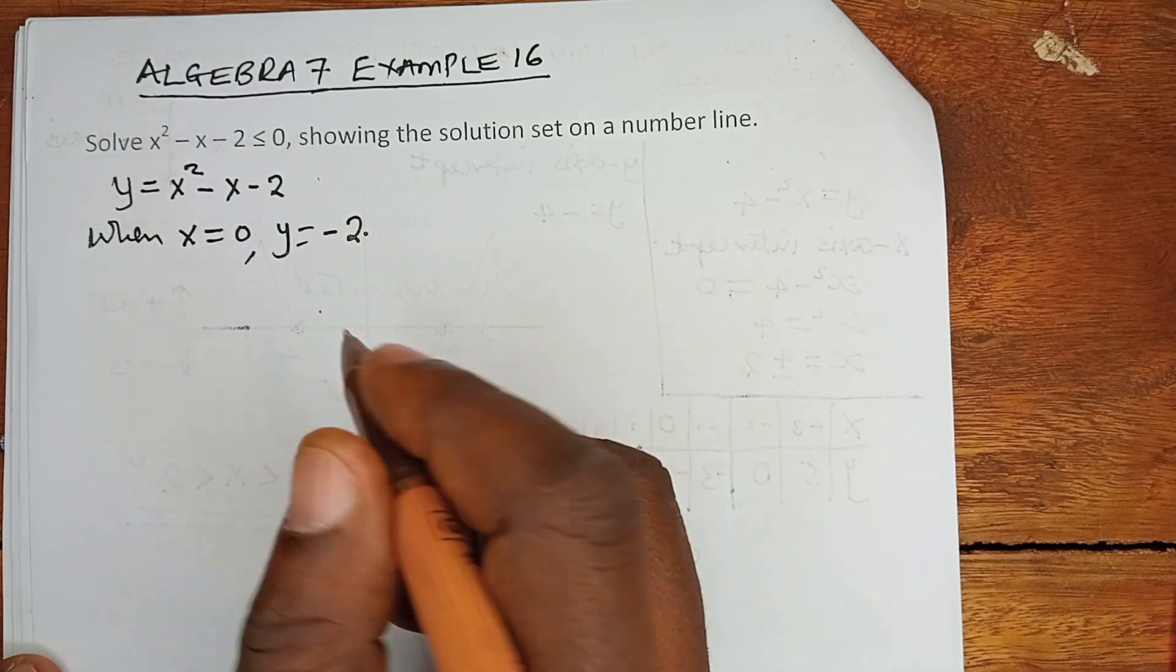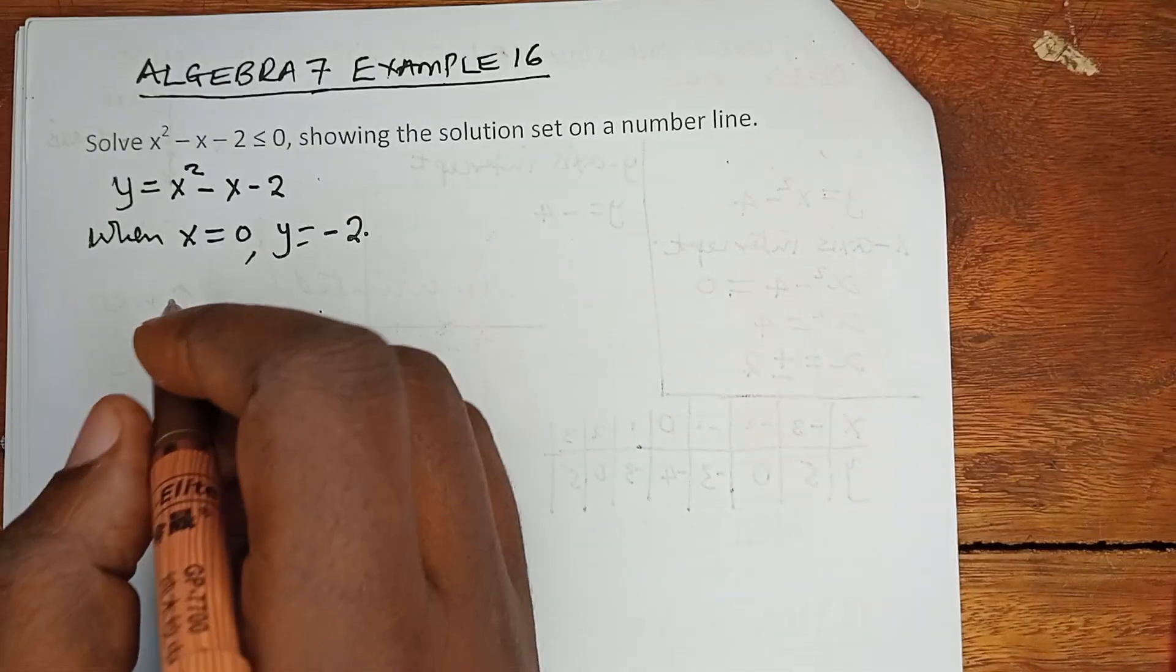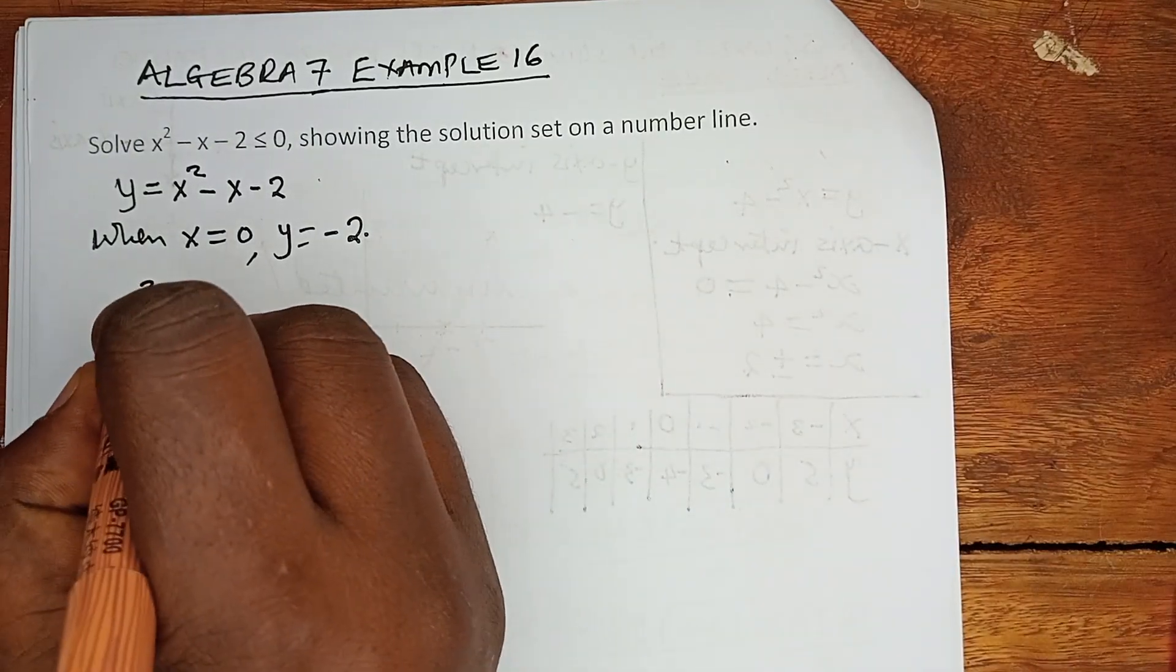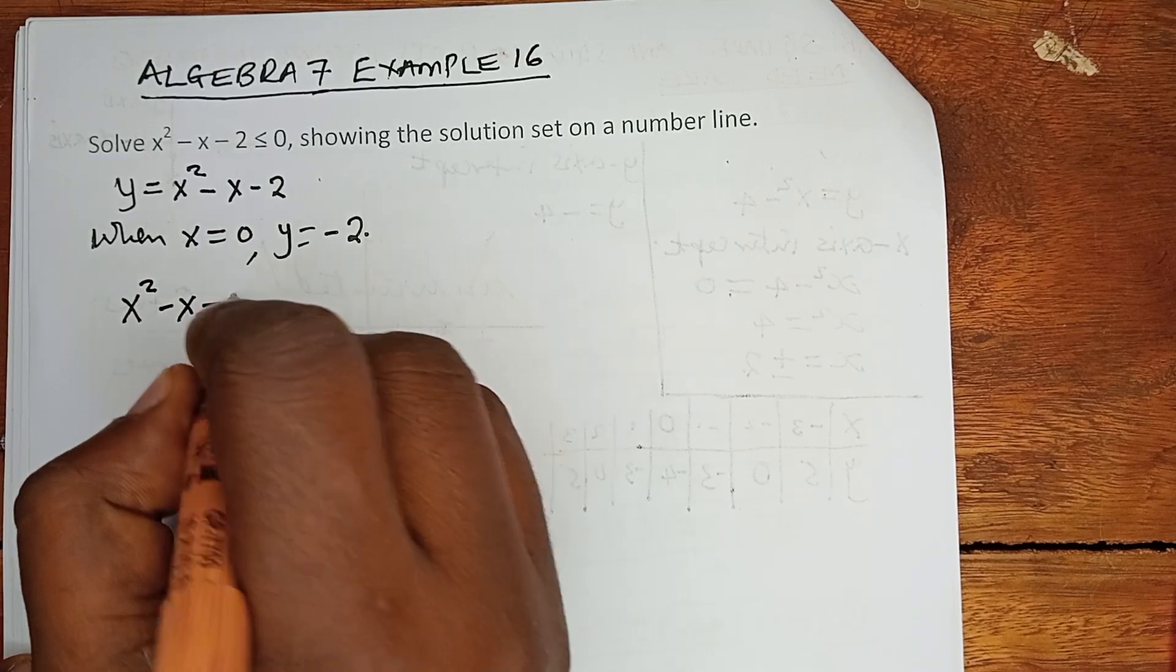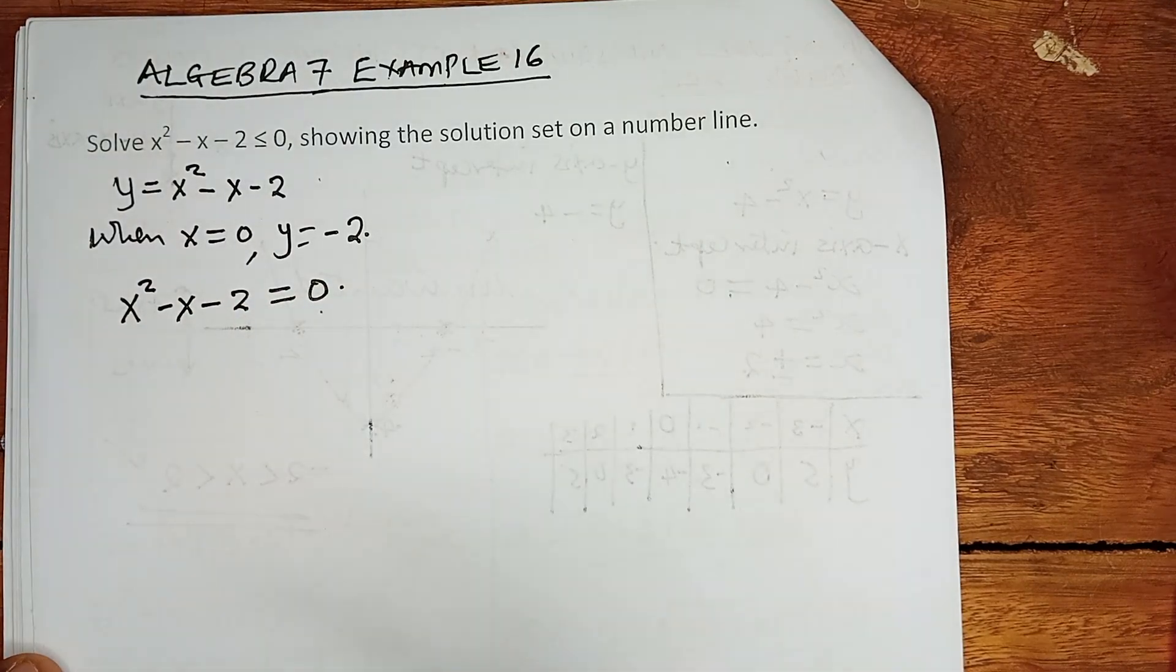What about when y is 0? When y is 0, it looks like now we have x squared minus x minus 2 equals 0. This is an attempt to look for the x-axis intercept.